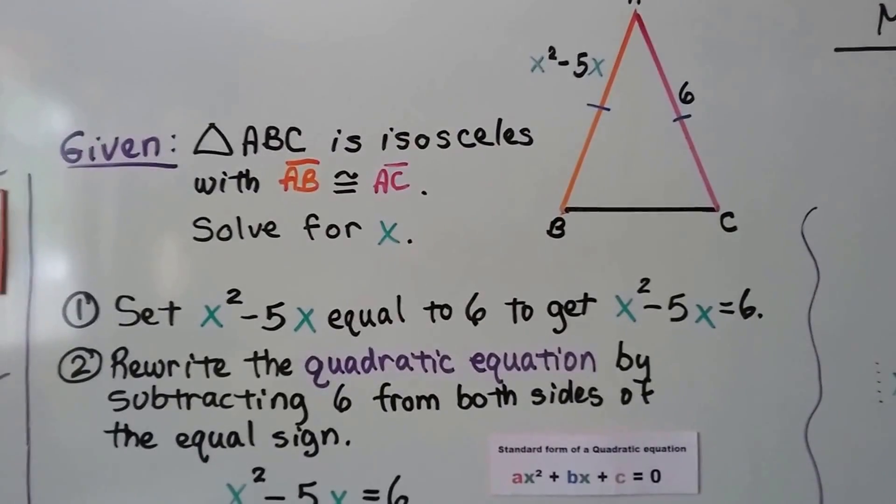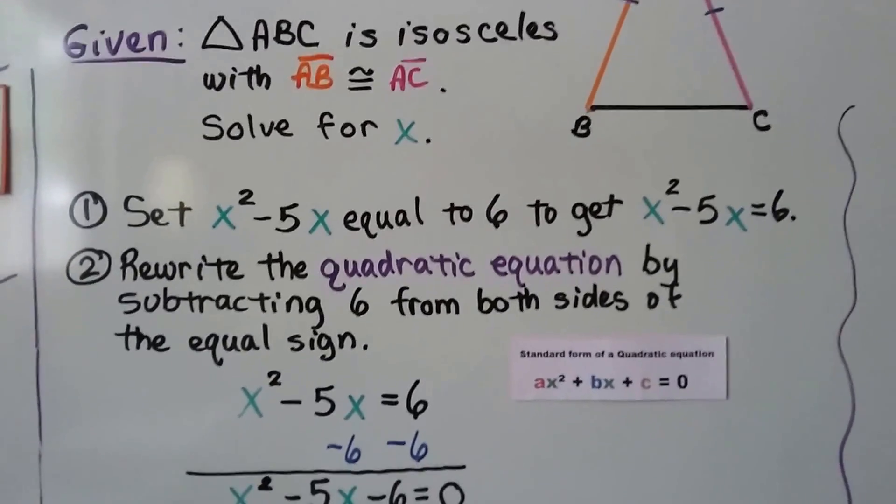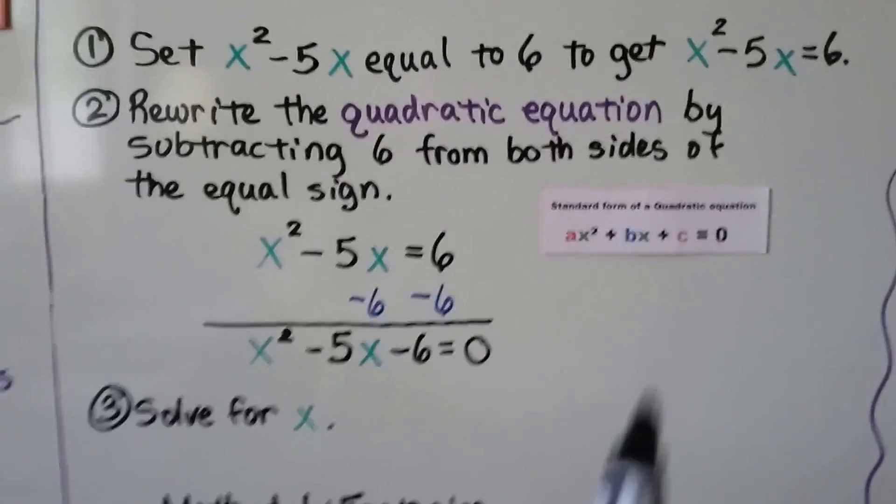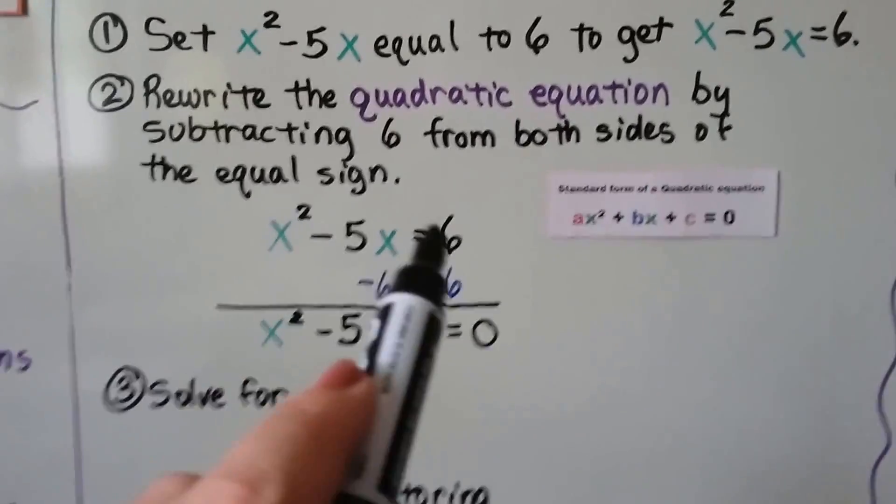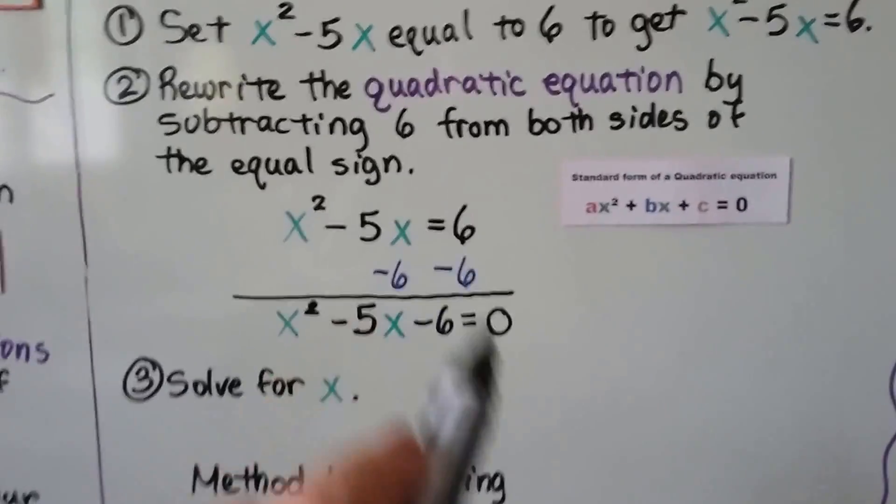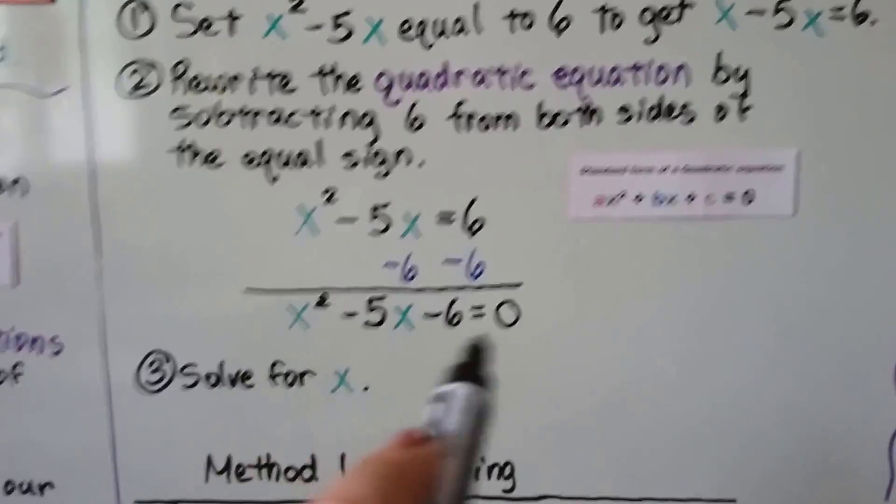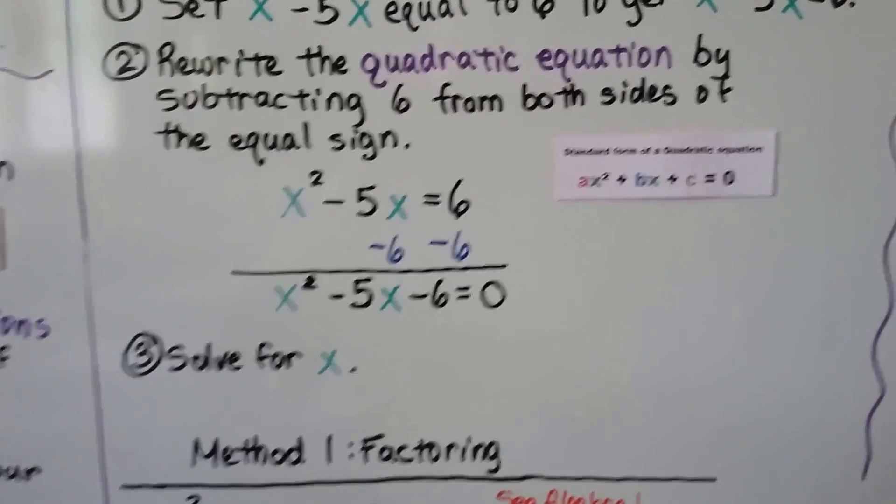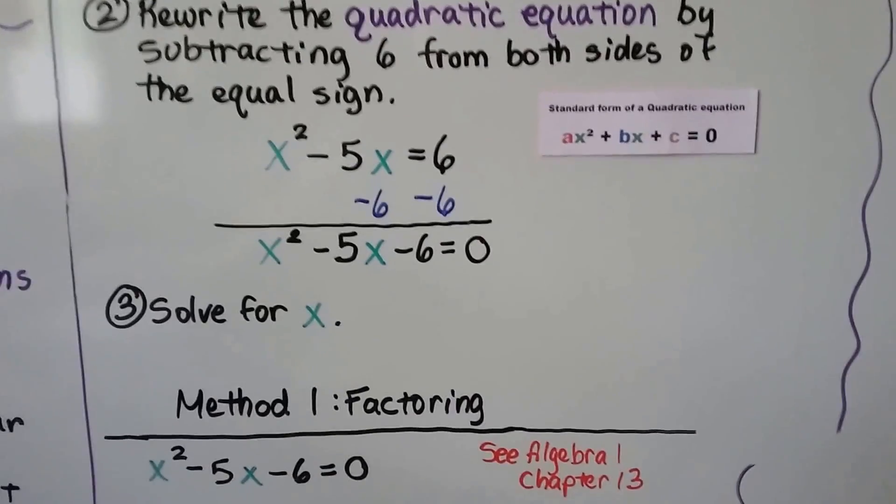We rewrite the quadratic equation by subtracting 6 from both sides of the equal sign. We want to set it to equal 0, so we take this 6 away from both sides. After the equal sign we'll have a 0, and now we've got x² - 5x - 6 = 0. We solve for x.